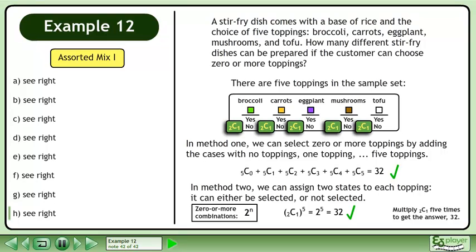We can use the formula for zero or more combinations, 2 raised to the power of n, or we can multiply 2 choose 1 five times to get the answer 32.